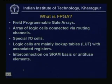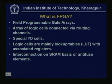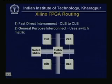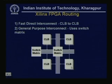FPGA structure has already been seen. Field programmable gate arrays consist of an array of logic cells connected via routing channels. There are special IO cells, and logic cells are mainly look-up tables with associated registers and interconnection on SRAM basis or antifuse elements. This is one Xilinx FPGA routing — CLBs (complex logic blocks) and switch boxes are connected. The overall idea of FPGA: they are programmable using switch boxes — general purpose interconnect uses switch matrix.